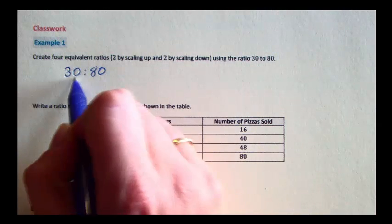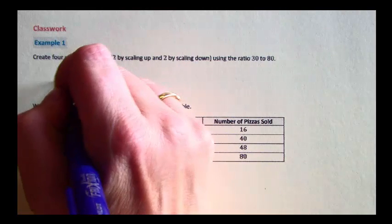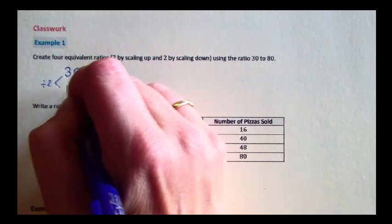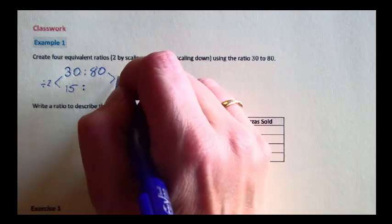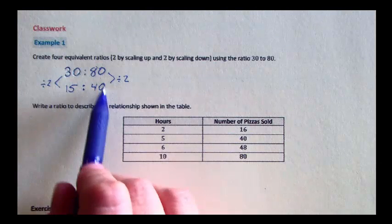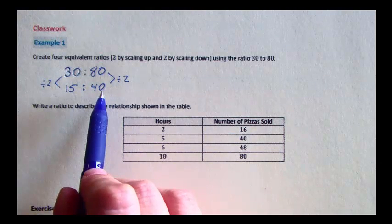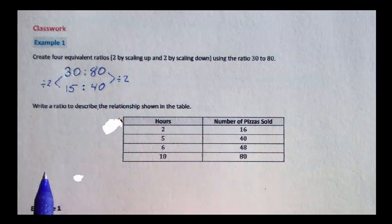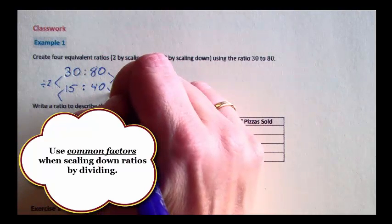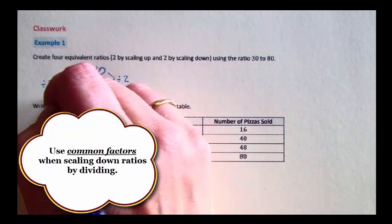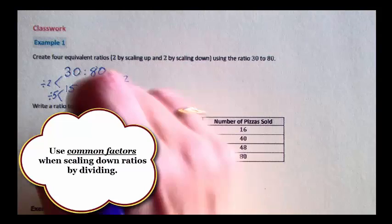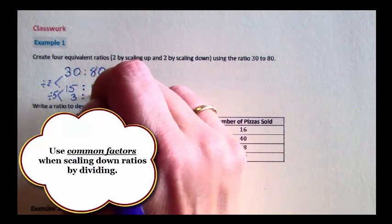Now these two numbers, we can make them smaller by dividing them both by the same thing. They're both even numbers, so I can divide them by 2. 30 divided by 2 is 15. 80 divided by 2 is 40. This is an equivalent ratio that I have scaled down from 30 to 80. I can even scale 15 to 40 down some more. They're both divisible by 5, so I can divide them both by 5. That gives me 3 to 8.